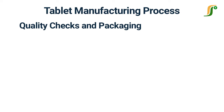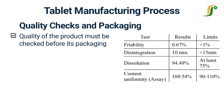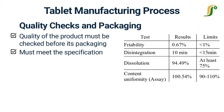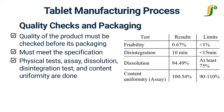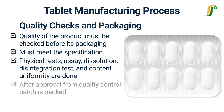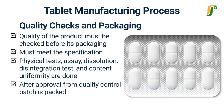It is essential to check the quality of the product before its packaging. It ensures that the product is of desired quality and meets the specification. Quality control analysts conduct a series of tests specified for the product: physical tests, assay, dissolution, disintegration test, and content uniformity are the most common tests done for every batch of the product.